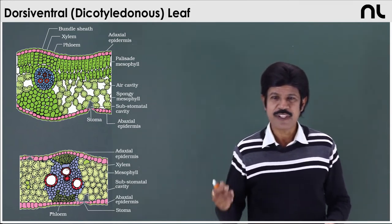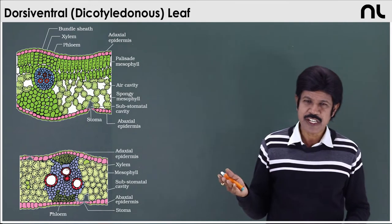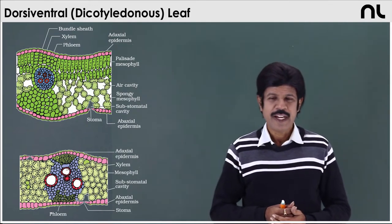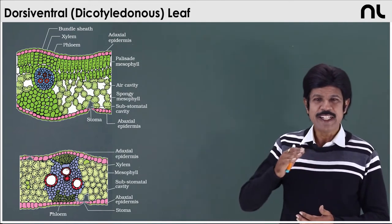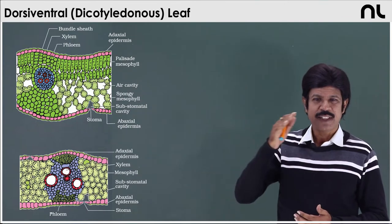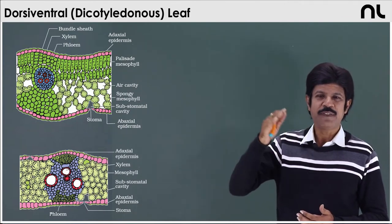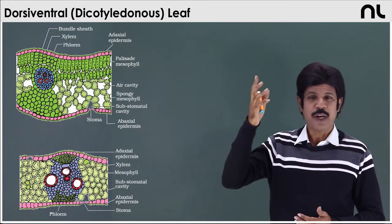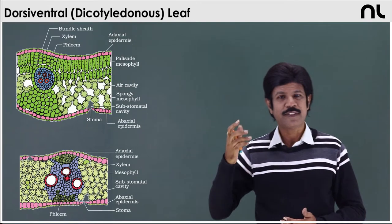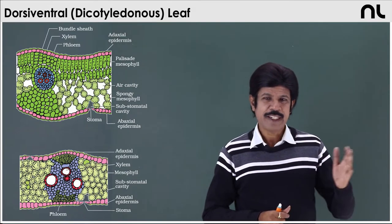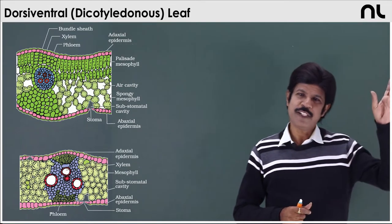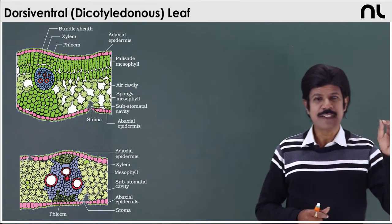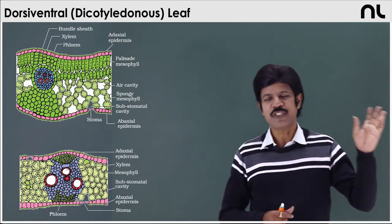Bifacial leaf is a differentiated leaf — that is the dicot leaf. In the case of the dicot leaf, the inclination and arrangement of the leaf is oblique, so the upper surface receives more light. In the case of the monocot, it is vertical — the leaf is hanging, and the margins receive much light.